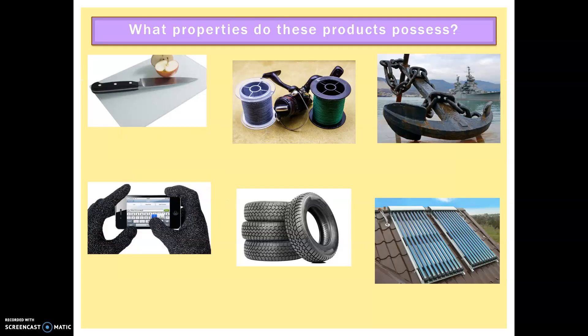So I would now like you to pause the video and have a little think about what properties these products possess. So we've got a chopping board, we have fishing wire, we have an anchoring chain, we have gloves which allow you to interact with devices, a rubber tire, and last there we have water solar panels. Okay, so pause the video and then we'll go through the answers in a second.